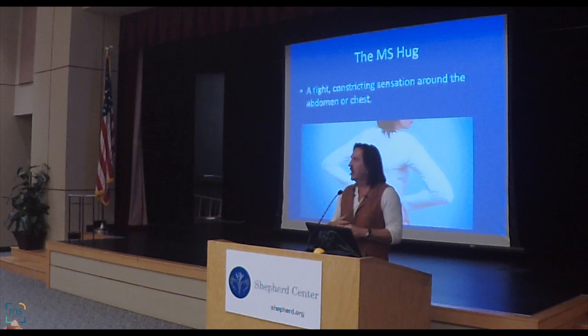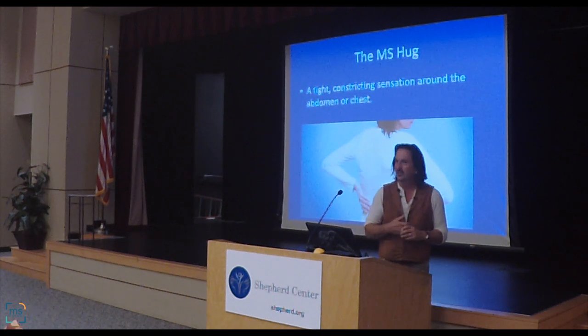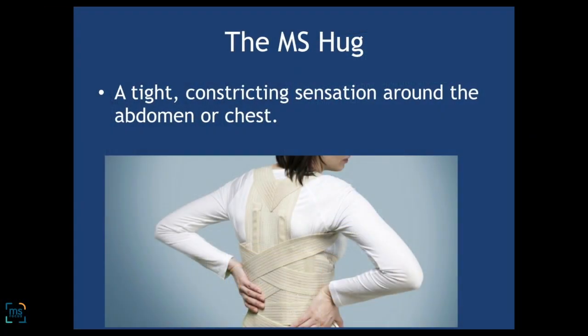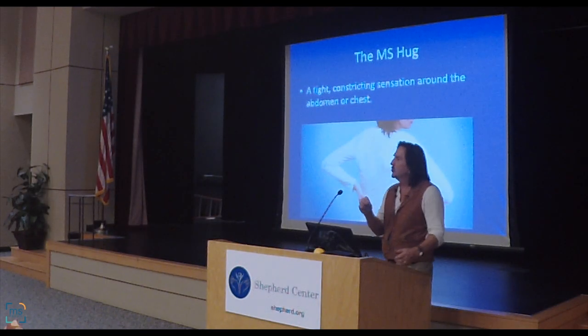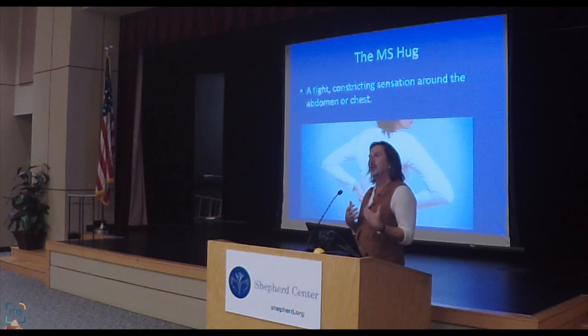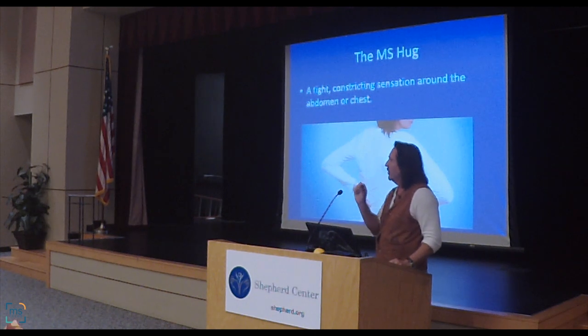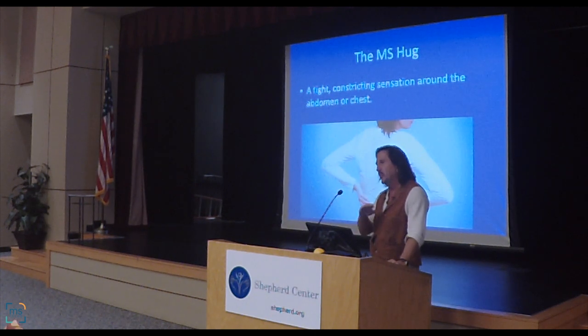The MS hug — when we say hug, you'd think that would be pleasant, but unfortunately this is like being hugged by a grizzly bear. This is usually a form of spasticity. The nerve roots coming off the spinal cord supply muscle bands between your rib cage, and those muscles can spasm like a belt going around your chest or abdomen. If they spasm enough in the chest, you can get something called a restrictive ventilatory defect — feeling like you can't take a full breath — but if we measure your blood oxygen levels, they're actually completely normal.